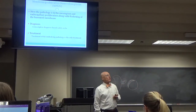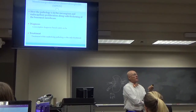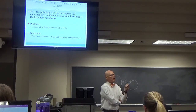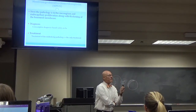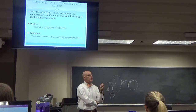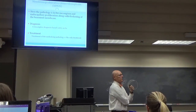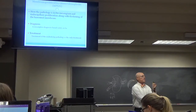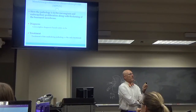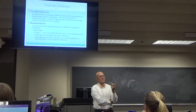Membranoproliferative glomerulonephritis involves pathology in the mesangium and endocapillary proliferation with thickening of the basement membrane — probably too detailed for PANTS. It presents with nephritic or usually nephrotic syndrome. Diagnosis is made strictly on biopsy. There's nothing that will distinguish it except urinalysis and edema on physical exam, and treatment is usually steroids.